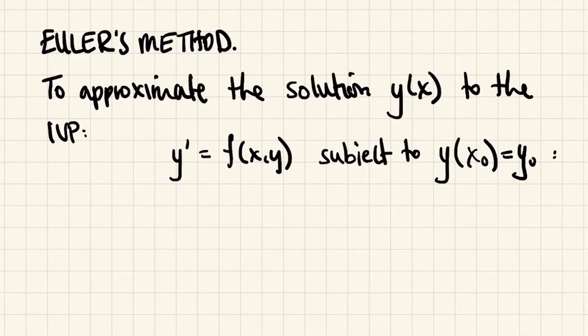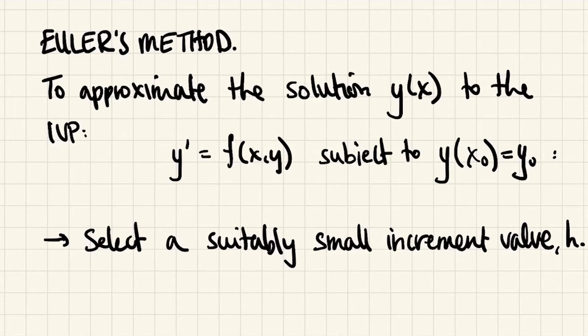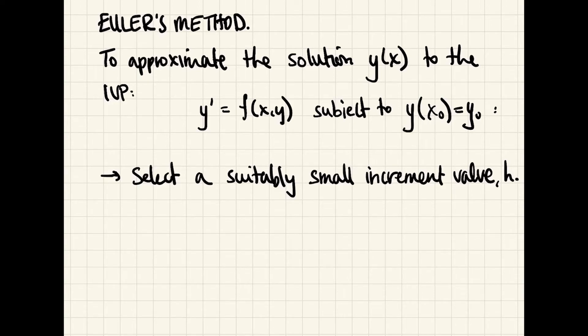So Euler's method will approximate the solution to this initial value problem. Our first job is to select a suitably small increment value and call it h. The smaller h is, the more calculations that you need to do because your increments will be very close together. However, the better your approximation is going to be. Once you've decided on your h value, you can generate as many xₙ's and yₙ's as you need. And the way you do that is this way. xₙ is the previous, so xₙ₋₁ + h, it's just h units over to the right.